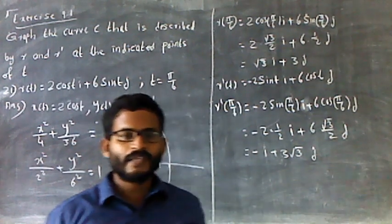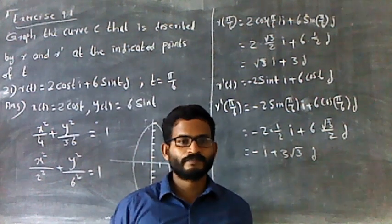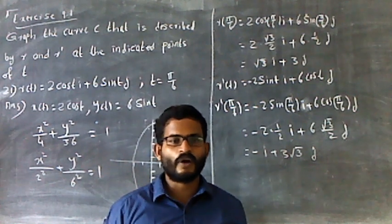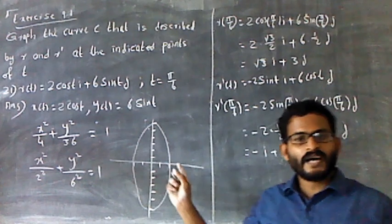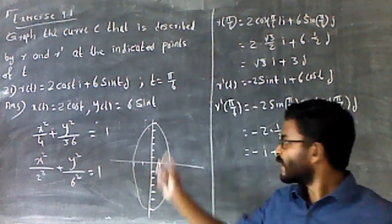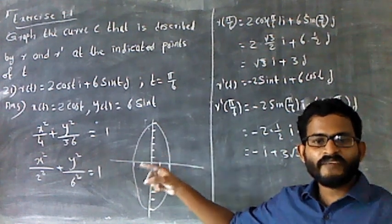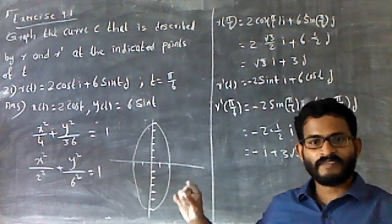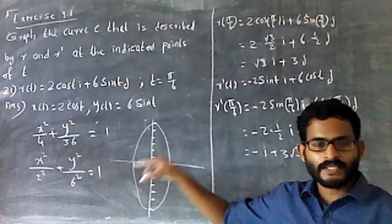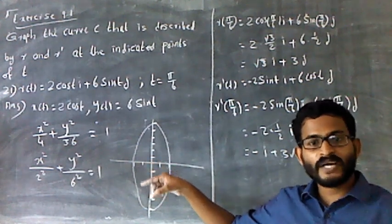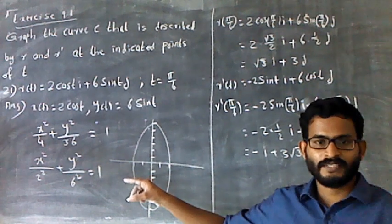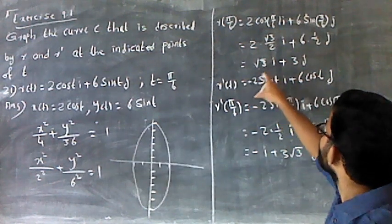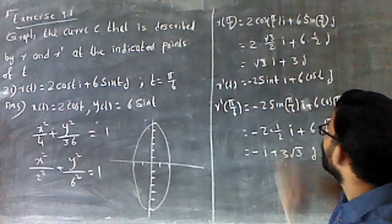We can plot this in the graph of curve C described by R and R dash, up to the indicative points of T. This is a tangent. R dash of 5π/6 — in one direction, R5 basics in one way — is the tangent, equal to 2√3 i plus 2√3 j.